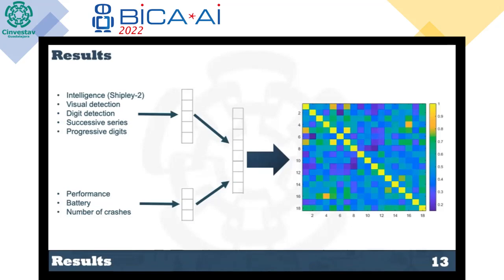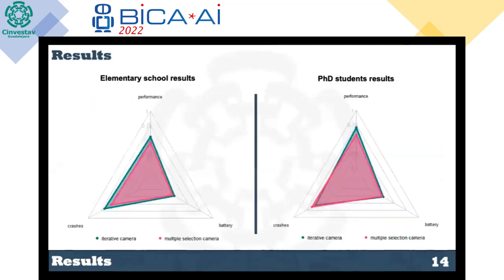However, we found that even though most humans did not show similar results between them, they shared some common aspects. Mainly, it seemed that showing the information of one camera at a time resulted in slightly better performance than showing all available cameras at the same time. We think that small improvement is due to the fact that one camera at a time drains attention slower than five cameras at the same time.